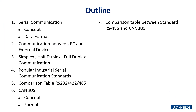The outline of this presentation will go through seven topics. First, we will talk about the serial communication concept and data format. Second, explain the communication between the PC and external devices. Third, introduce the transmission mode in serial communication. Fourth, talk about popular industrial serial communication standards, and finally the CAN bus concept and comparison table with other standards.